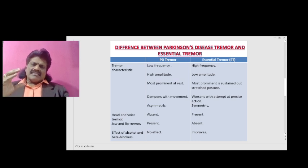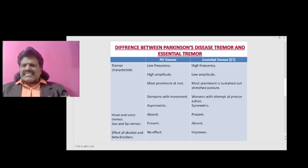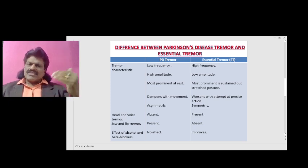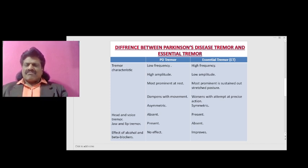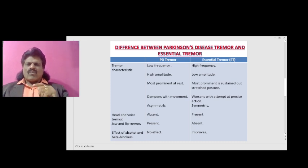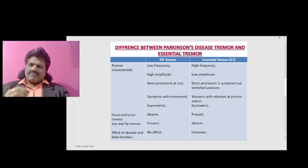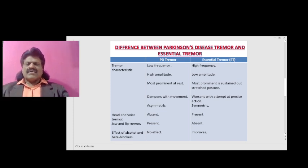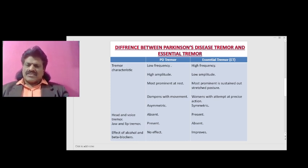Parkinson's disease tremor is usually asymmetric, beginning in one hand, whereas essential tremor is usually symmetric. Head and voice tremor is absent in Parkinson's disease but present in essential tremor. Jaw and lip tremor is present in Parkinson's disease but absent in essential tremor.